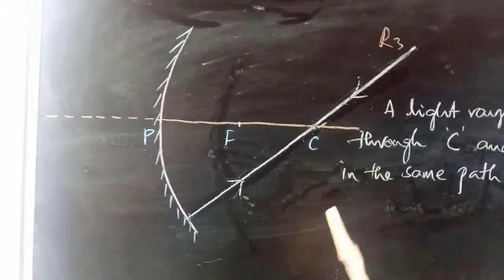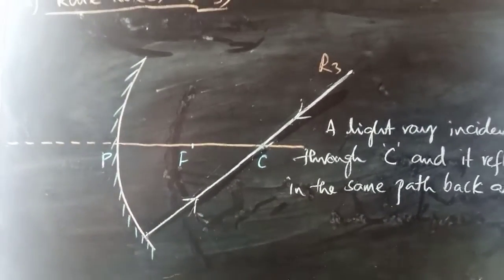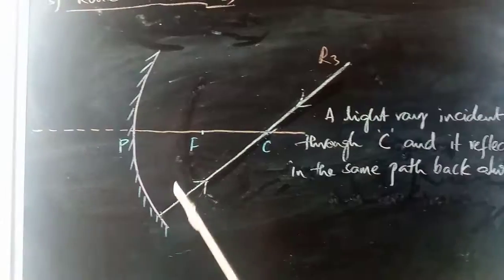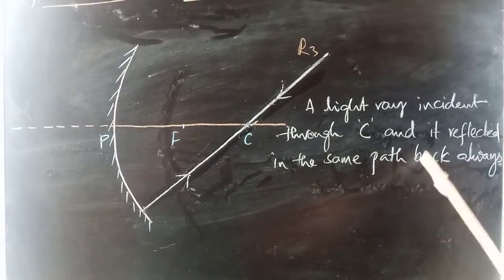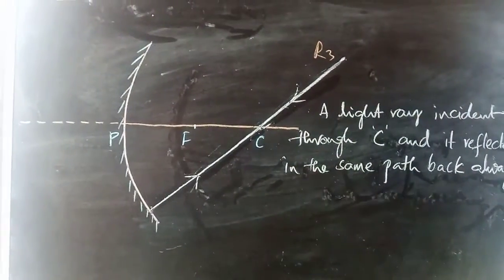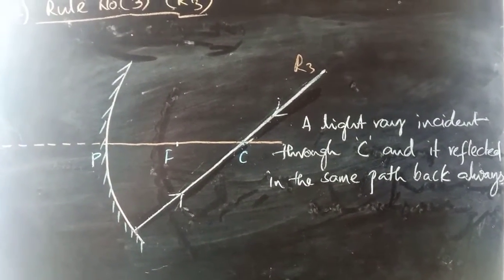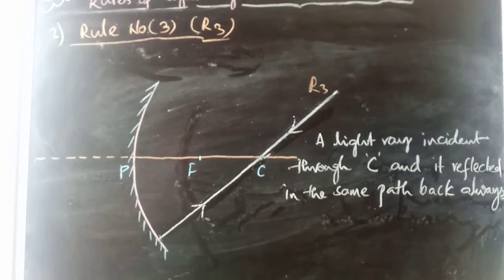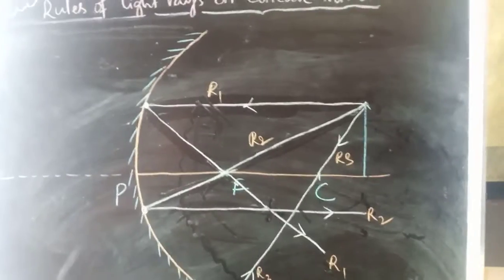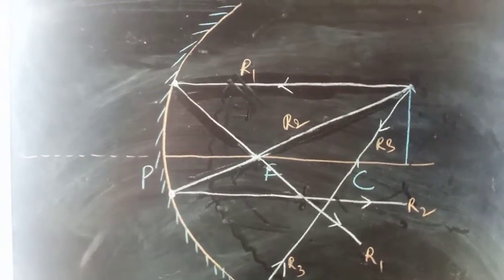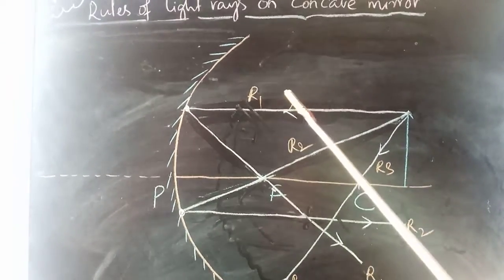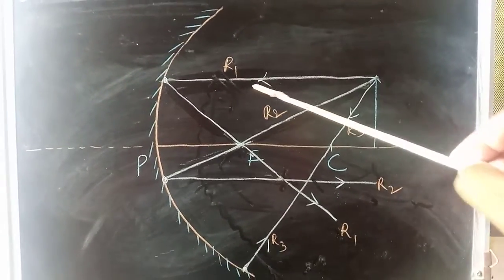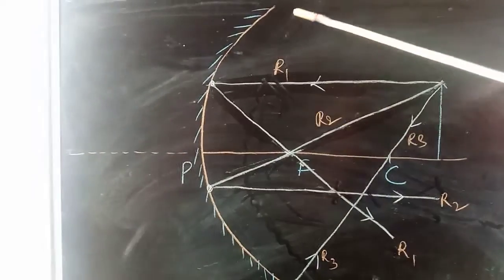Rule Number Three: a light ray incident through the center of curvature will be reflected back in the same path always. These are the three rules. Now we will see all three rules together in one diagram. What we have learned are the three rules of light rays reflecting on the concave mirror — incident rays reflecting according to each rule.